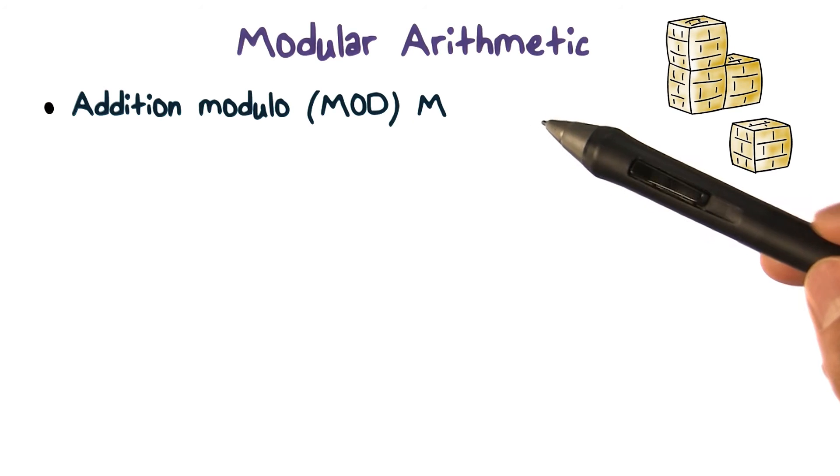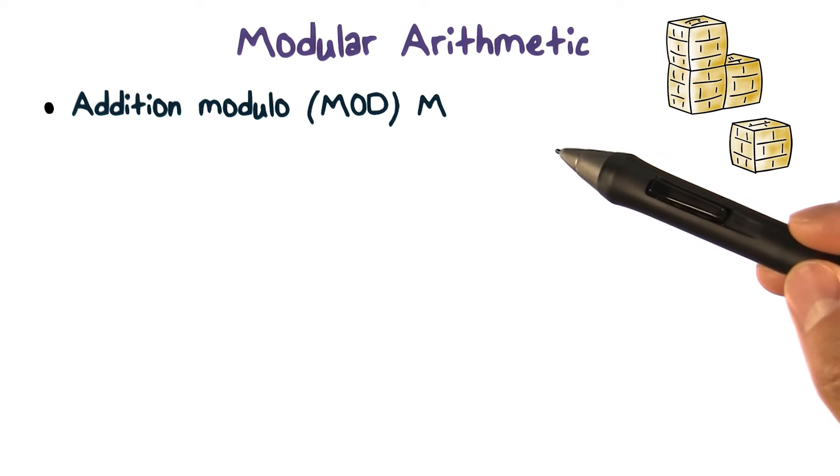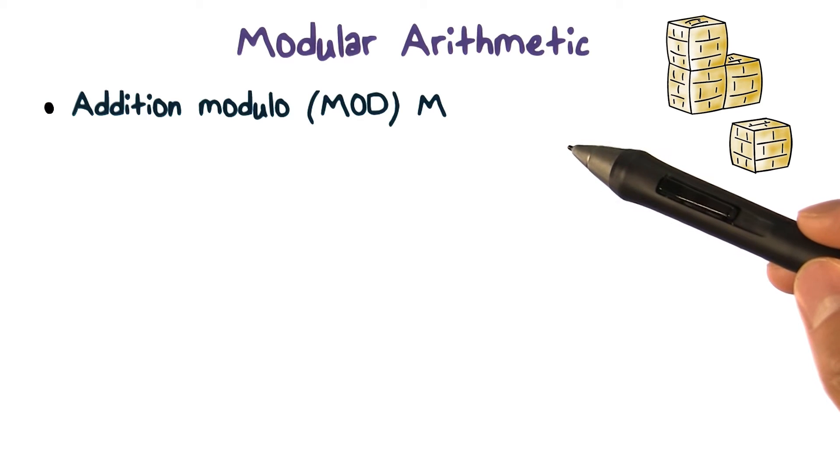First, let's explain modular addition. Given a modulus M, x plus y mod M is the remainder of x plus y divided by M. For example, 2 plus 8 divided by 10, the remainder is 0. Therefore, 2 plus 8 mod 10 is 0.